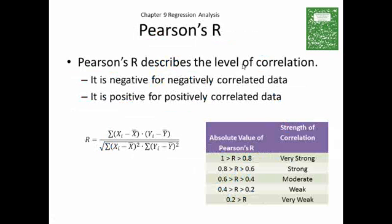Another aspect that we're going to be looking at in correlation is Pearson's R. Now, Pearson's R describes the level of correlation. Pearson's R can be positive or negative. Here's the equation here. It's positive if two things are positively correlated. It's negative if two things are negatively correlated. Let's take a look at this equation for a little bit here.